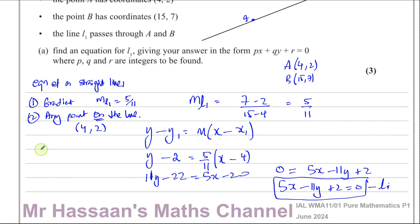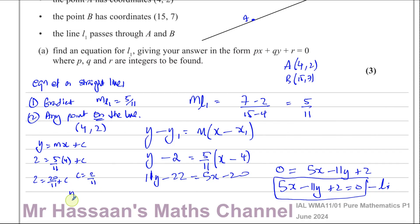A lot of people will use y = mx + c. Using that method: substitute in y = 2, x = 4, m = 5/11 to find c = 2/11. Then y = (5/11)x + 2/11; multiplying both sides by 11 gives 11y = 5x + 2, so 5x − 11y + 2 = 0 — the same answer. Whether you use (4, 2) or (15, 7) doesn't matter; you'll still get the same answer.